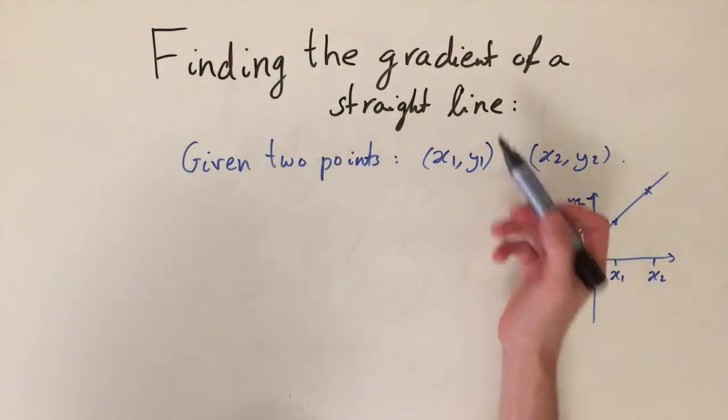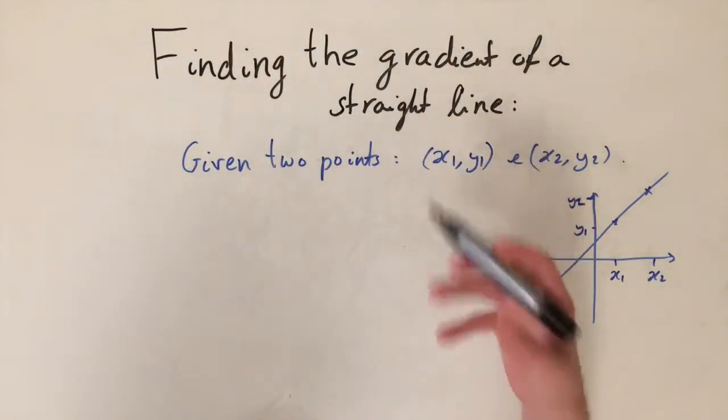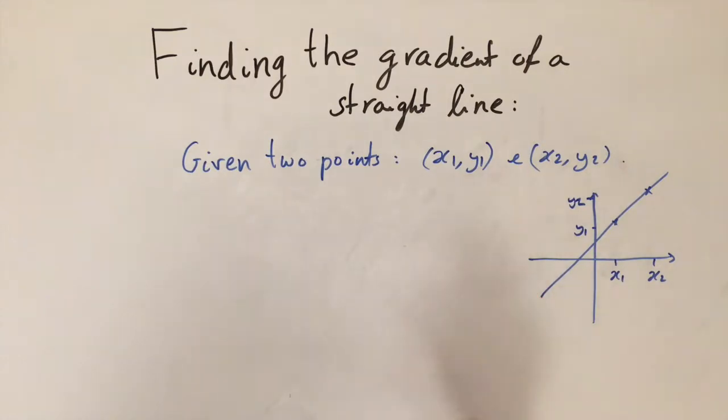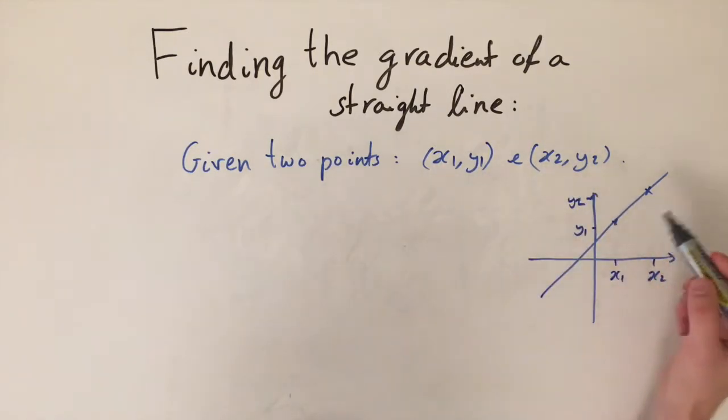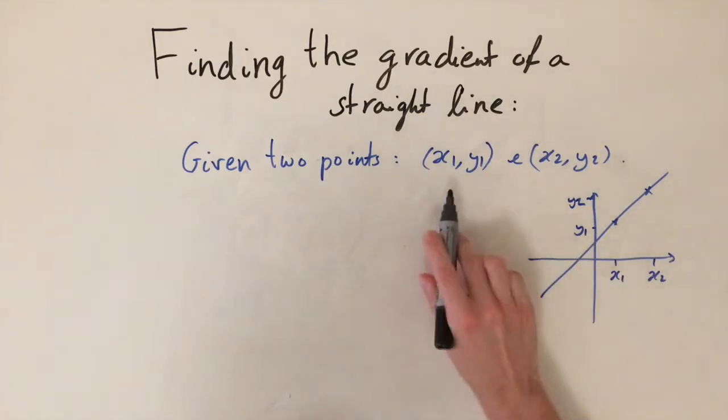Okay, so today we're going to be looking at how to find the gradient of a straight line. The problem is set up like this: we are given two points, so I've written the general case out as (x1, y1) and (x2, y2), and we want to find out the gradient of the straight line that passes through these two points.